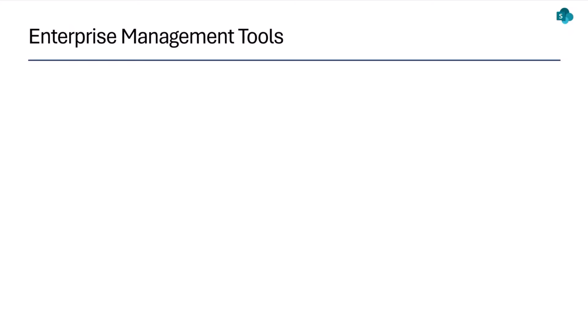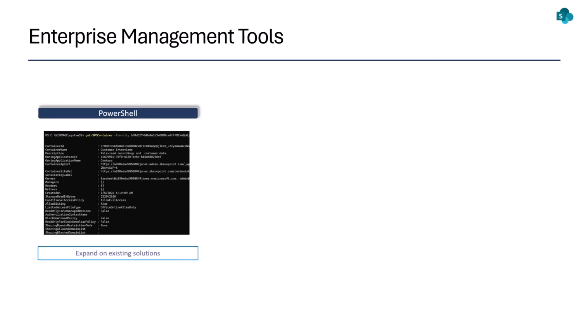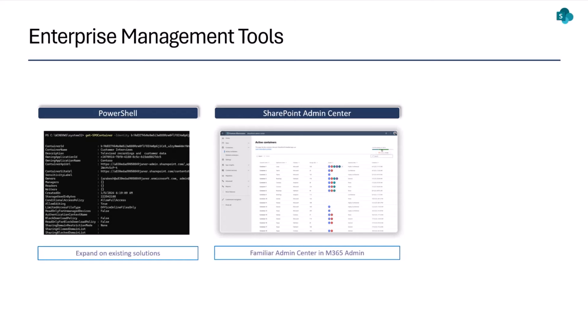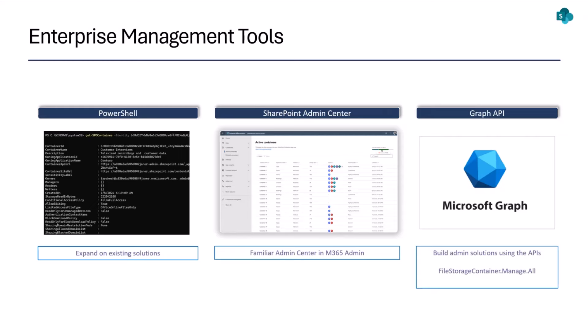We provide three different tools for admins to manage containers. The first is PowerShell — already available in production — with commands very similar to SharePoint sites, enabling admins to administer containers created in their tenant. The second tool is the SharePoint Admin site, where admins can see active containers and deleted containers, just like they see active and deleted sites. Finally, for customers interested in building their own administration tool, we provide admin Graph APIs — available in the next three to four months.